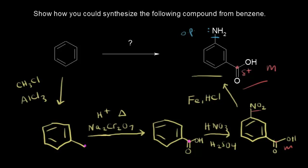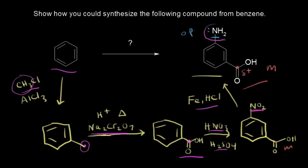Our synthesis is complete. Let's run through the reactions quickly to make sure everything makes sense. Starting with benzene, we do a Friedel-Crafts alkylation to put a methyl group onto our benzene ring to form toluene. Next, we oxidize that alkyl side chain with sodium dichromate to convert it into a carboxylic acid, which is now a meta director. So when we nitrate the ring, the nitro group is placed meta to the carboxylic acid. Finally, we reduce the nitro group to turn it into an amino group, and we're done.